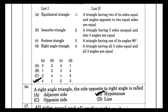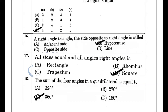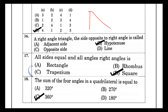The side opposite to the right angle in a right-angle triangle is the hypotenuse. A shape where all sides are equal and all angles are right angles is the square.